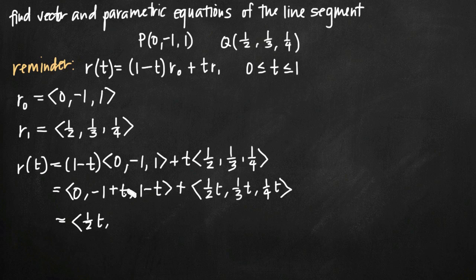For our y component, we want to add -1 + t to 1/3·t. Well, we've got our -1 out in front. Then we just get t + 1/3·t. Think about this t here as 3/3·t.